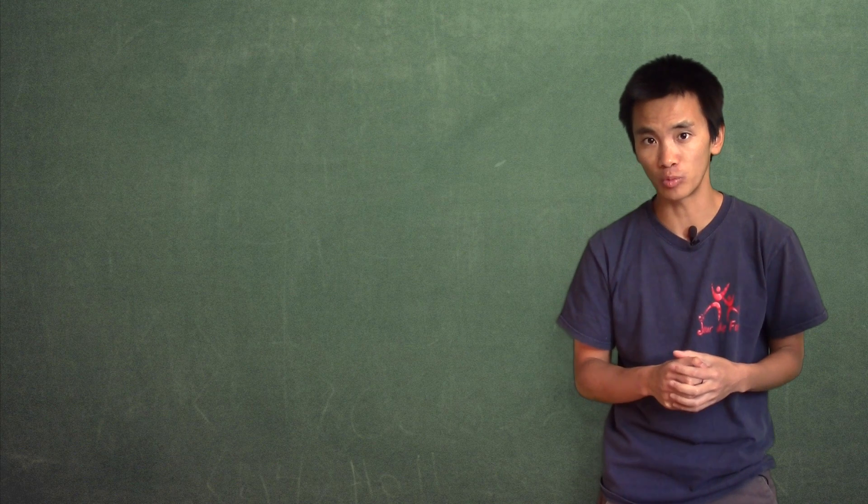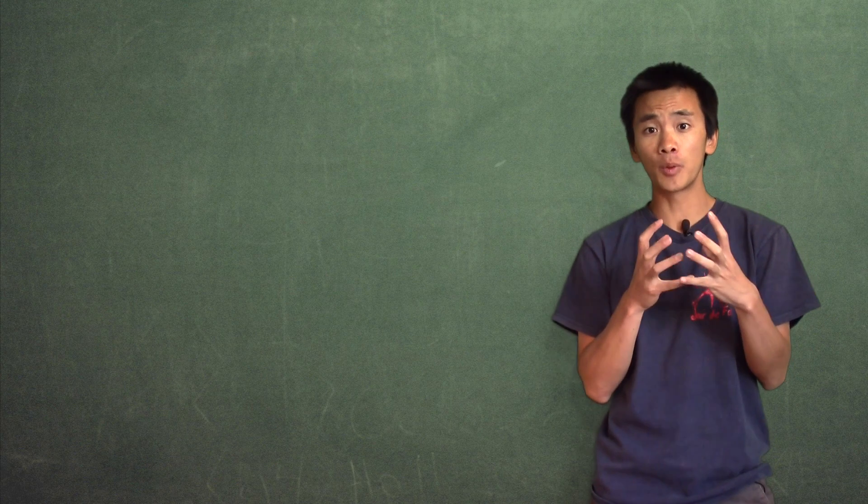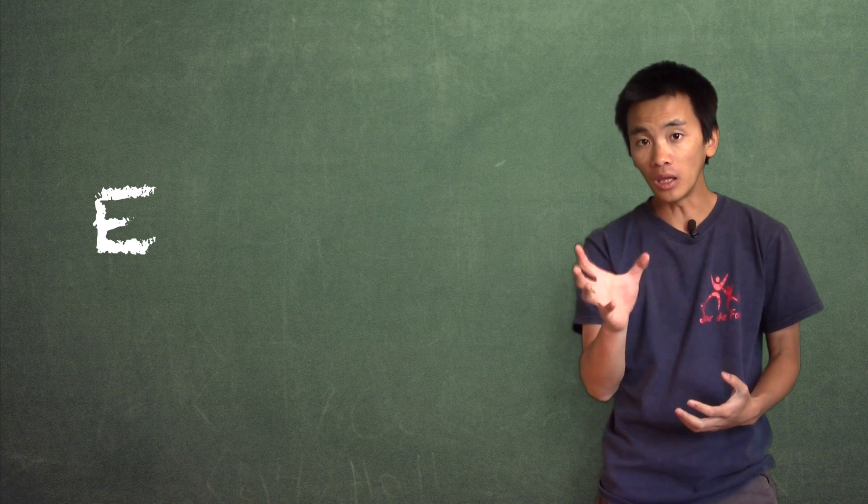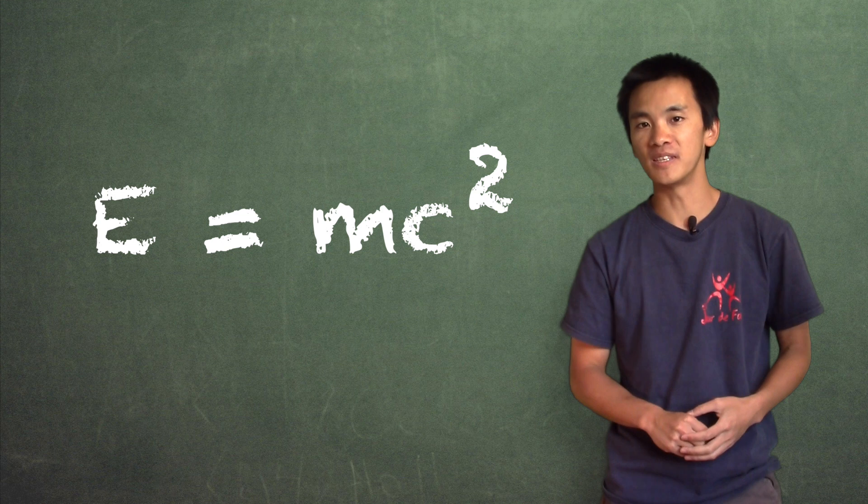In 1905, Albert Einstein wrote down what would turn out to be one of the most beautiful equations in all of physics: E equals mc squared.